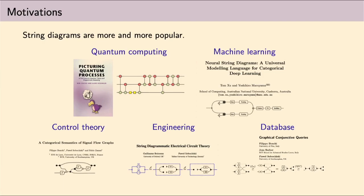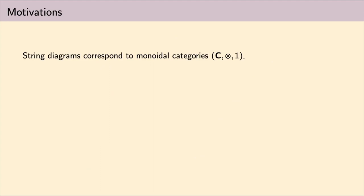String diagrams are becoming increasingly more popular. They are not only just a mere notation anymore, but they are being used to describe in a compositional way various kinds of systems, including, for example, the most notable example is that of the ZX calculus in quantum computing, but they also appear in machine learning, engineering, computer science, logics, and so on.